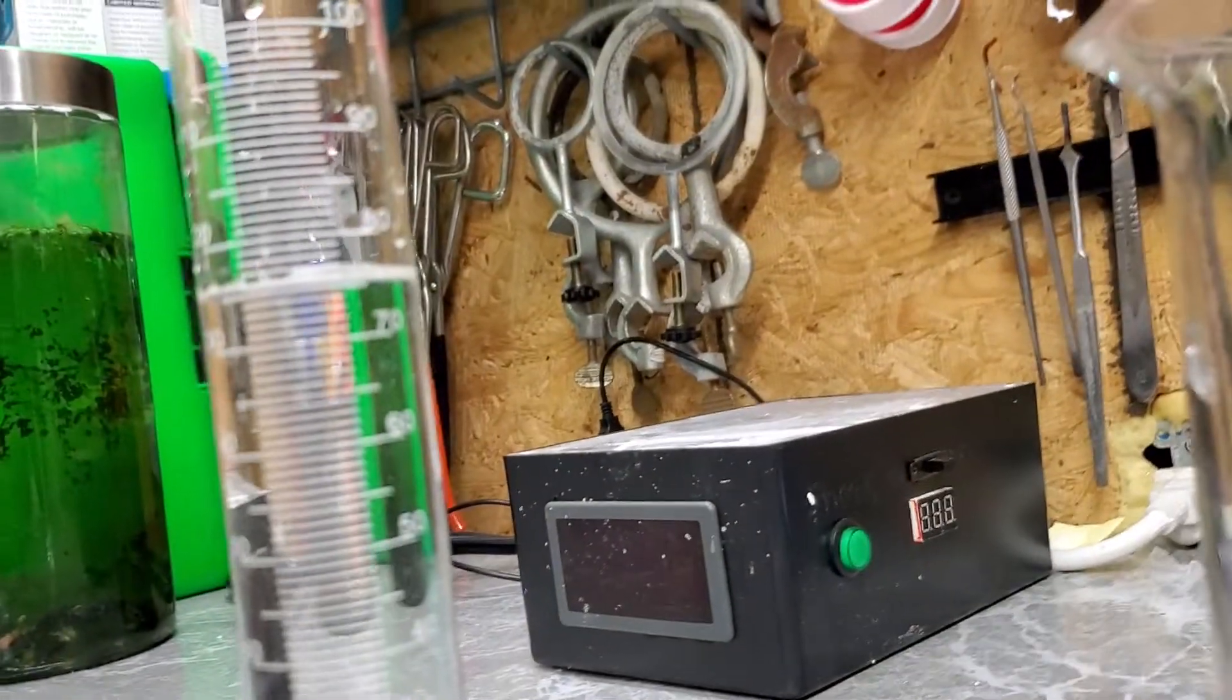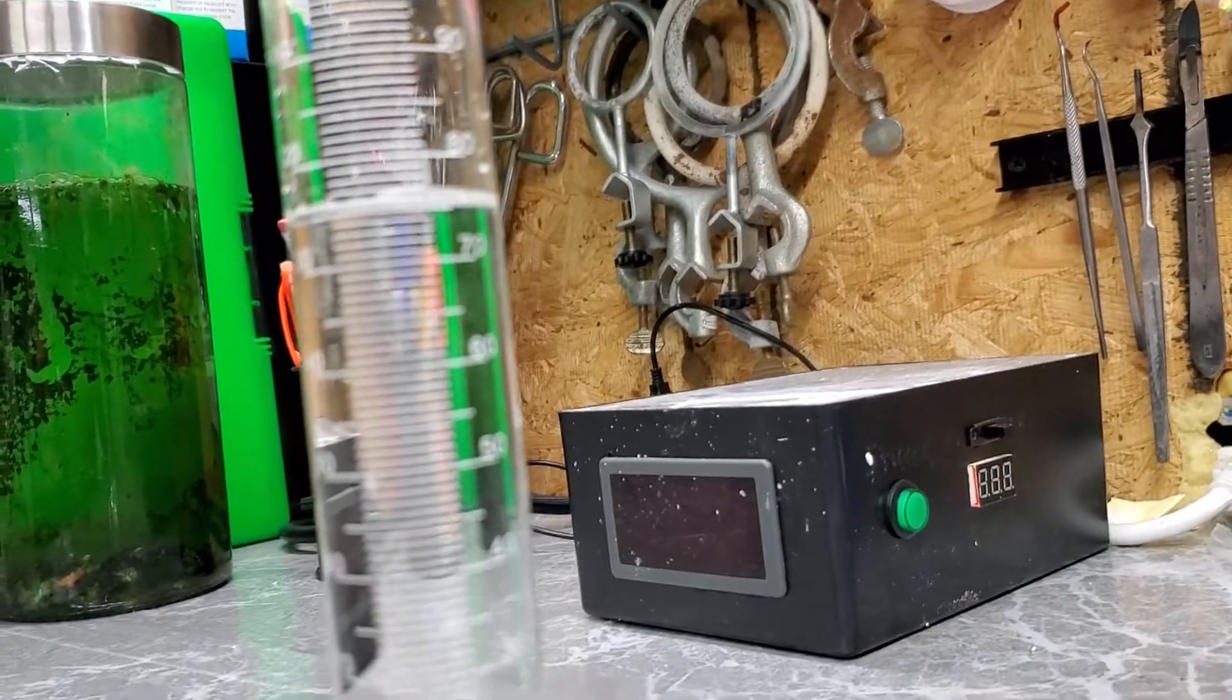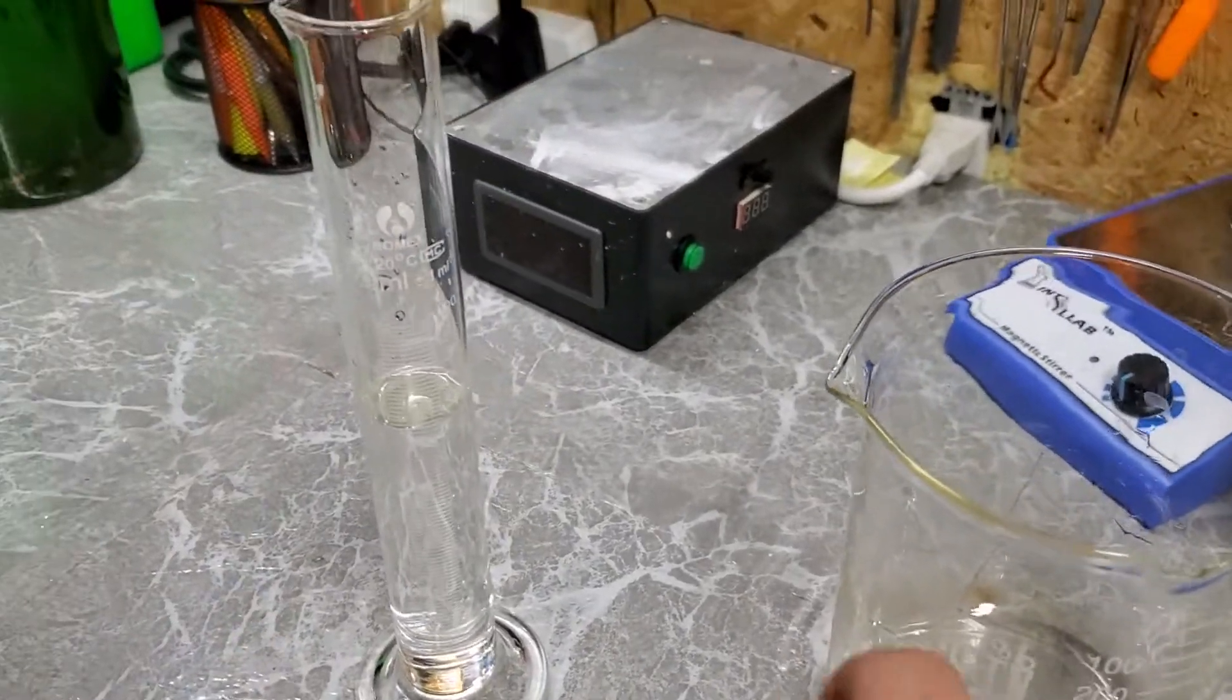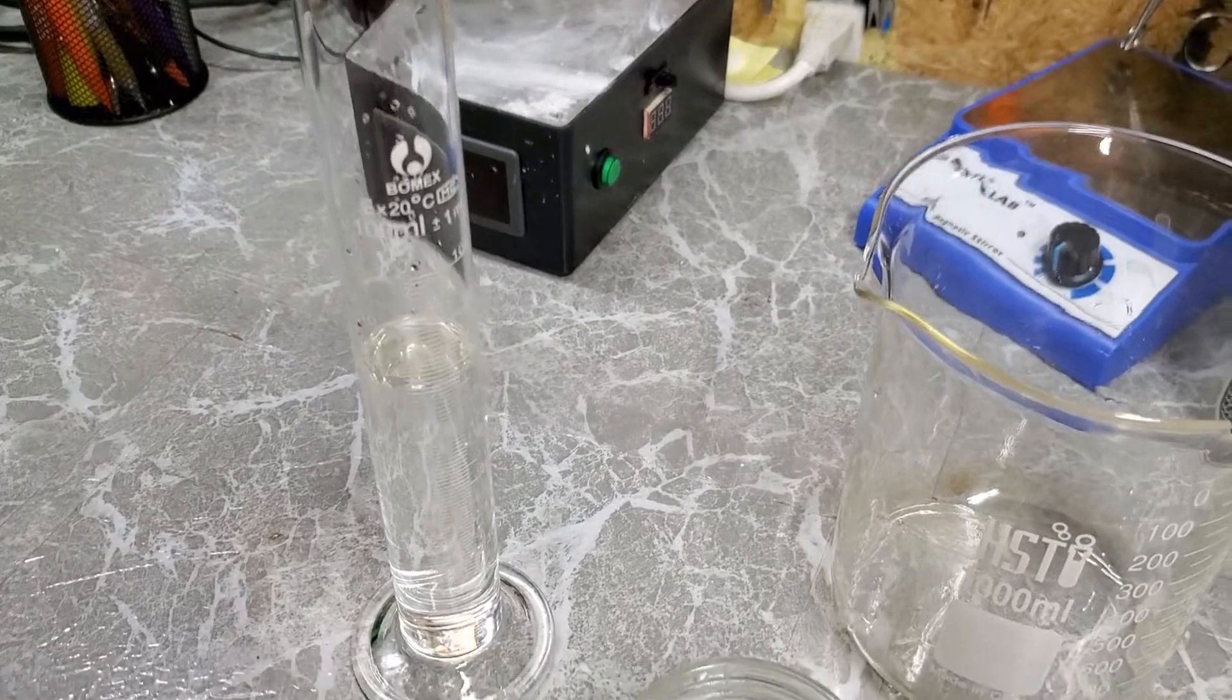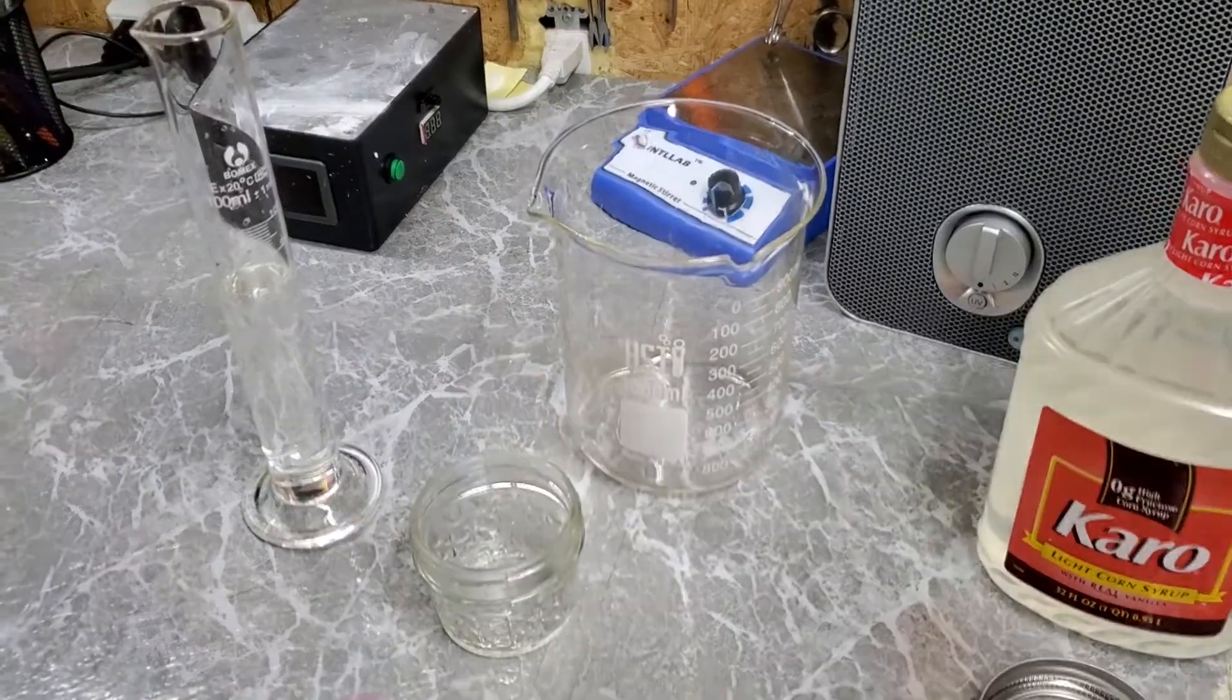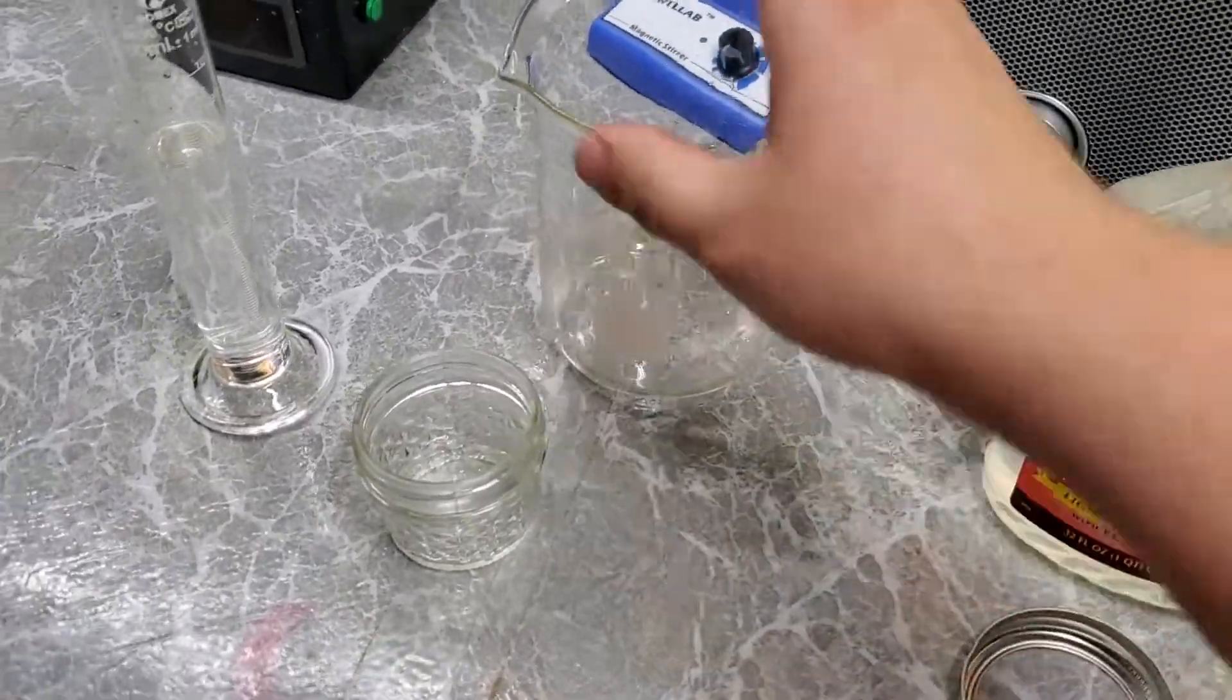So what do we got? About 75 milliliters. So 75 milliliters, I'm going to make nine of these. That means I need 675 milliliters of distilled water.